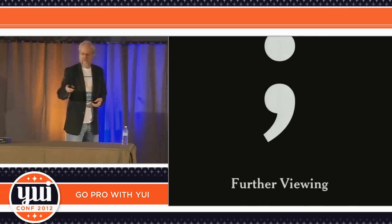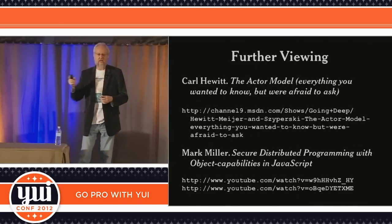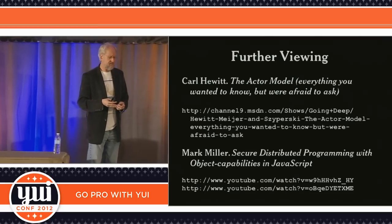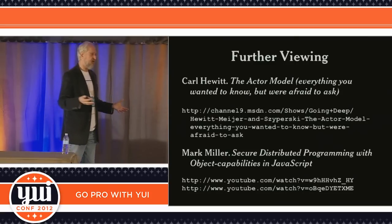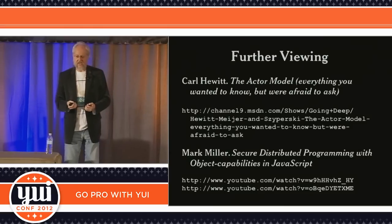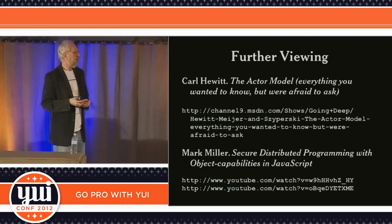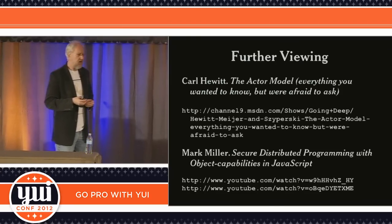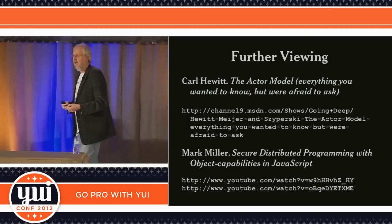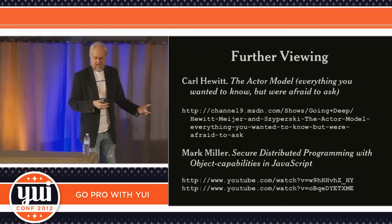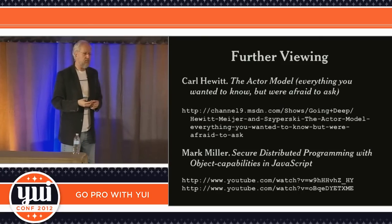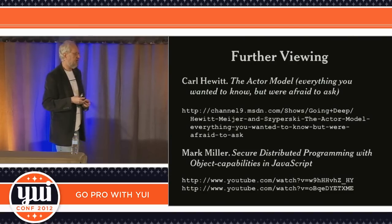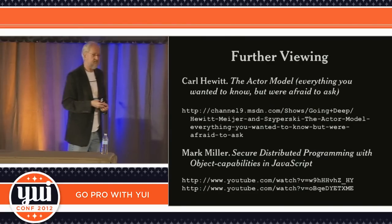We're going to do some questions. But before we get to the questions, I've got some stuff for further viewing. Carl Hewitt — amazingly smart guy — discovered the actor model at MIT. He was interviewed recently by Microsoft's Channel 9: a very nice interview in which he lays out what actors are and why they're so interesting. And Mark Miller was one of the first people to come up with promises — inspired by the future model that fell out of Carl Hewitt's actor model. Mark has done amazing things with promises and figured out a way to create wholly new financial systems based on them. Highly recommended.